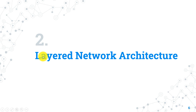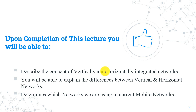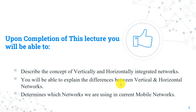Let's start our lecture now: Layered Network Architecture. This chapter describes the network layers that are in the core network. Upon completion of this lecture, you will be able to describe the concept of vertically and horizontally integrated networks, explain the differences between them, and determine which networks we are using in current mobile networks.